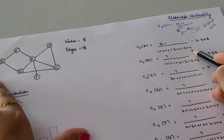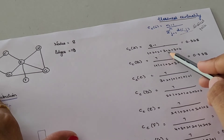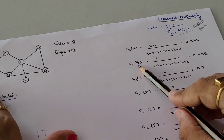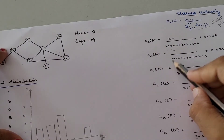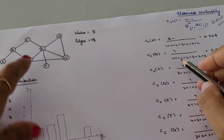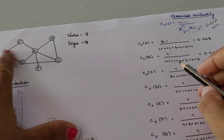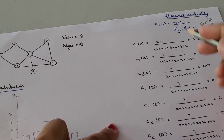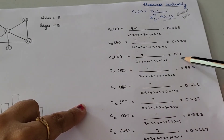So n minus 1 upon the summation of shortest paths: 7 divided by the total summation gives 0.368 for node A. In the same way, calculate for node B — from A, A to B is a single edge so we write 1; from C, C to B is a single edge; from D, D to B is 1; from E, you traverse either D-B or C-B, both 2 edges. Calculating this way for all nodes, 7 divided by the summation gives the closeness centrality for each node.